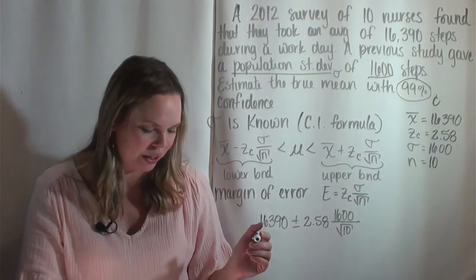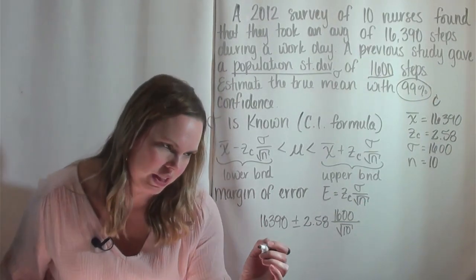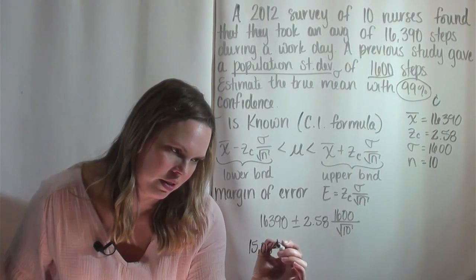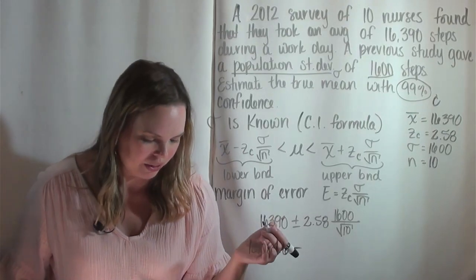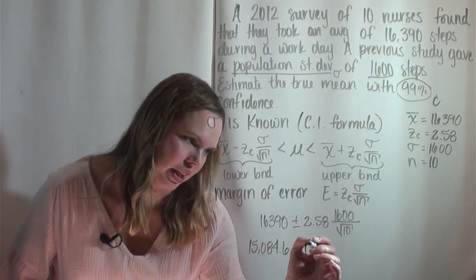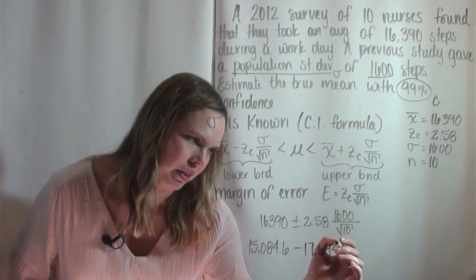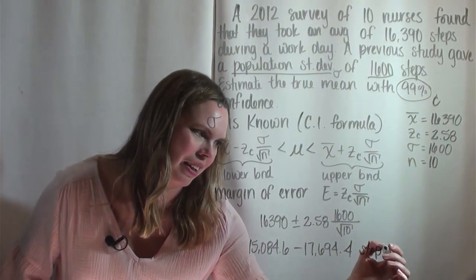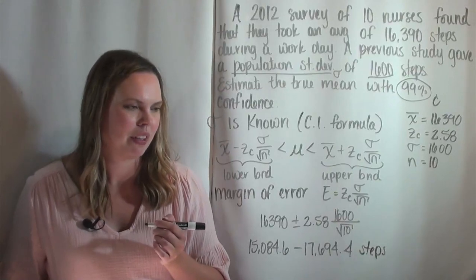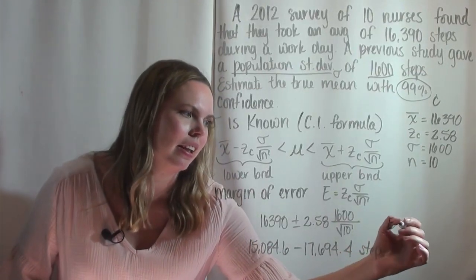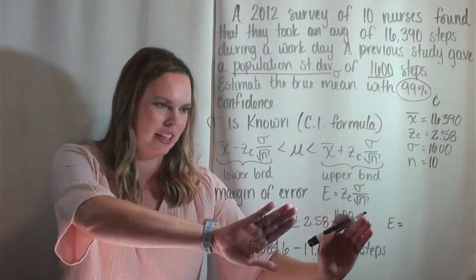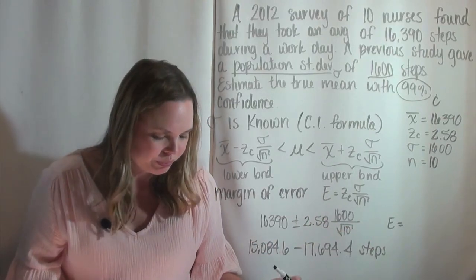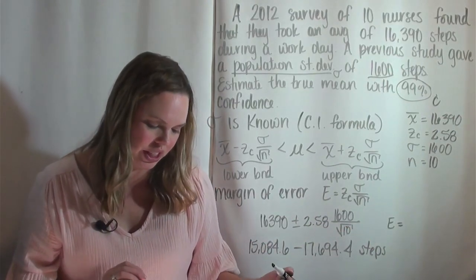So I get a lower boundary of 15,084.6 and an upper boundary of 17,694.4 steps. And then my E, using this formula right here, which is just this part of the equation, the 2.58 times this standard deviation, you should get 1305.